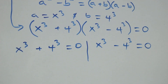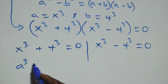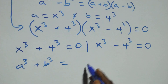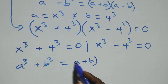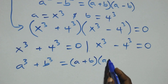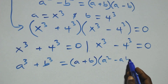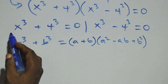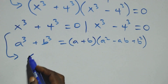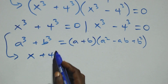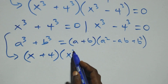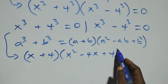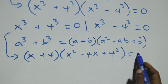Solving the first case, this follows the identity a cubed plus b cubed equals a plus b into bracket a squared minus ab plus b squared. So this becomes x plus 4 into bracket open bracket x squared minus 4x plus 4 squared close bracket equals to 0.